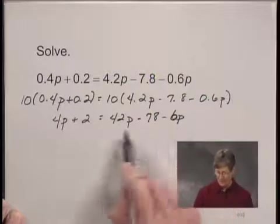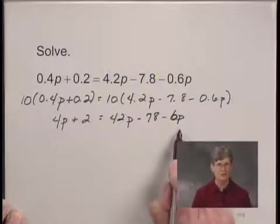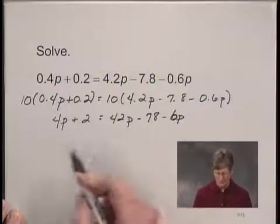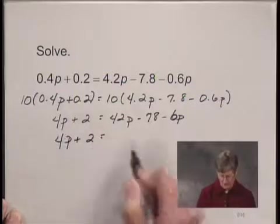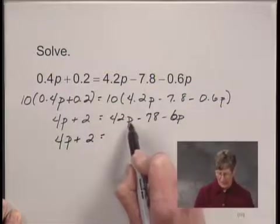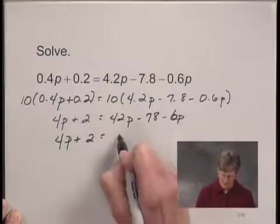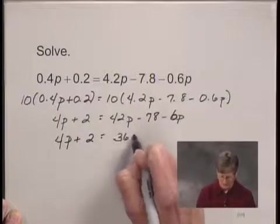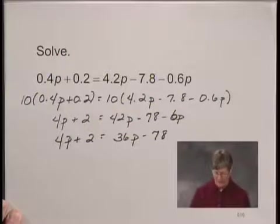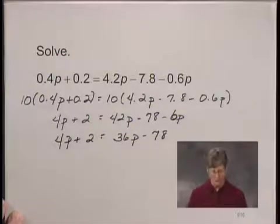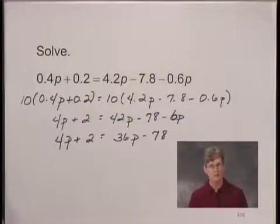Now I'm going to collect like terms on the right hand side. I have 2p terms here, so I'll just rewrite the left hand side. And I have 42p minus 6p, which is 36p minus 78 on the right hand side. Now I want to use the addition principle to collect all the terms that involve p on one side of the equation and all the other terms on the other side.